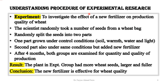In this slide we try to understand how we proceed or how we conduct an experimental research. This example will help us understand the procedure for conducting experimental research. Suppose we are performing an experiment to investigate the effect of a new fertilizer on production quality of wheat. The introduction of the new fertilizer is the independent variable and the quality of the wheat is the dependent variable.